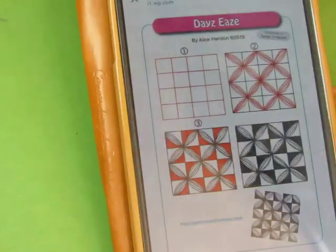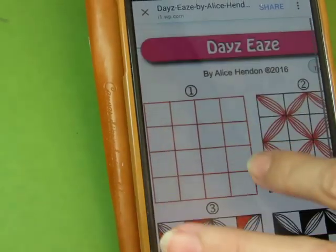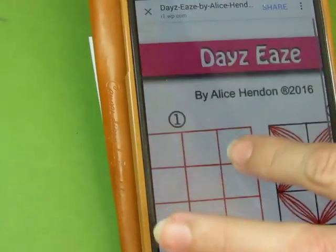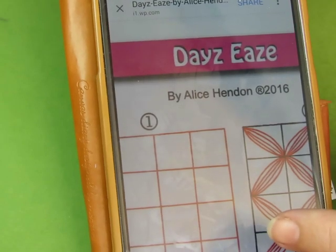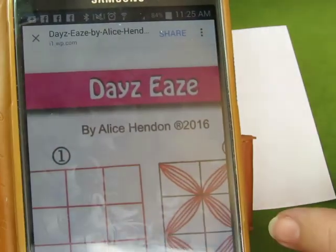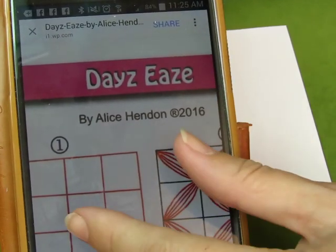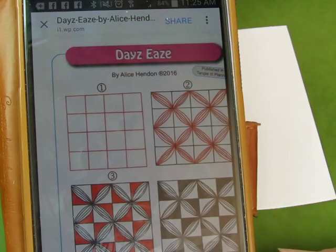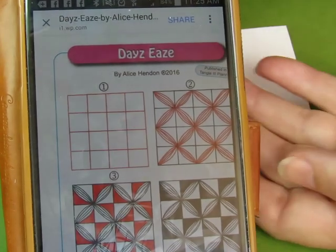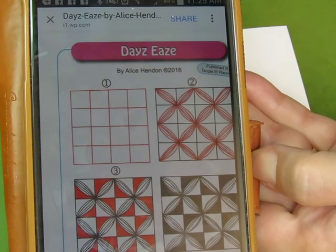Okay, the month is half over, it's November 15th. Can you believe that? Today's pattern is Daysease by Alice Hendon. It's another grid pattern. Where are my organic patterns? I don't know.